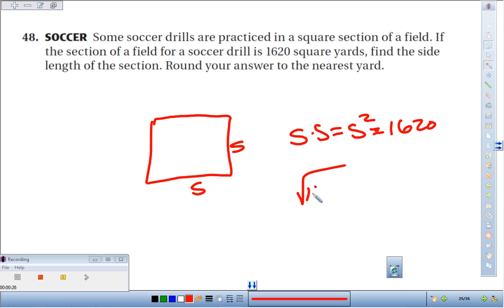Well, to find that, we could take the square root of 1620, which is going to be about, if we use our calculator, 1620 square root of it, you get about 40.25, which to the nearest integer would be about 40 yards for the length.